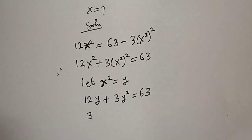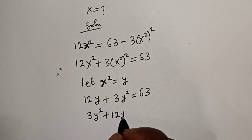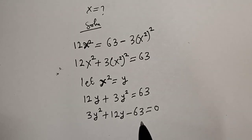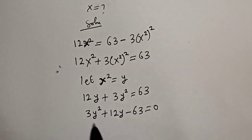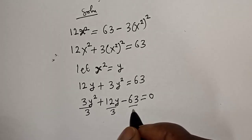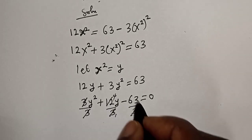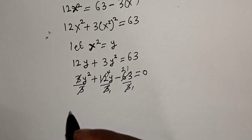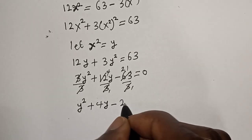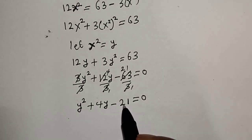Let's rearrange: 3y² plus 12y minus 63 is equal to 0. This is a quadratic equation, but we can still reduce it. Let's divide all terms by 3, so we get y² plus 4y minus 21 is equal to zero.